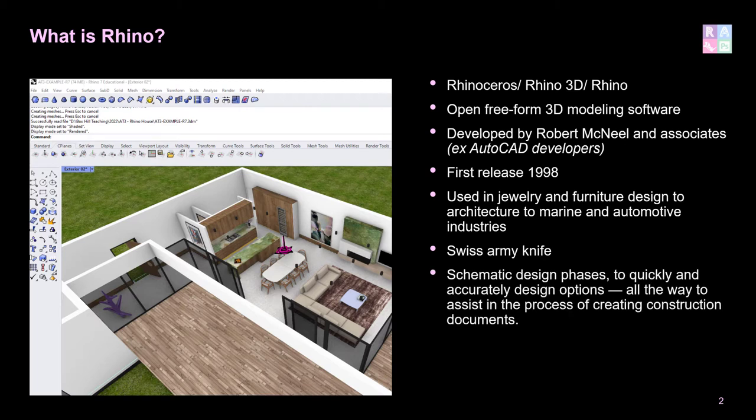In architecture, Rhino is used for everything from schematic design to quickly assessing design options, all the way through to creating construction documents, full construction details, annotations, and producing drawings that you'd create out of AutoCAD. It just varies firm to firm what their workflow looks like. The native Rhino file format is .3DM, and another reason why it really is the Swiss army knife of 3D modelling software is it exports into 49 different file formats — an extraordinary amount.